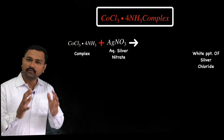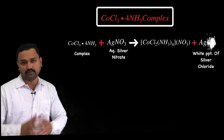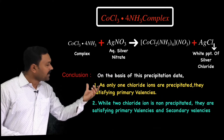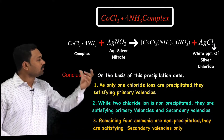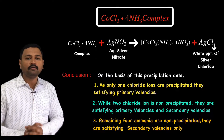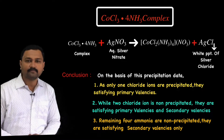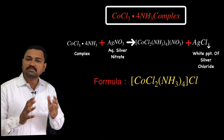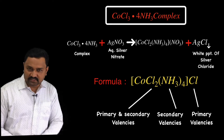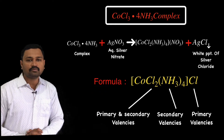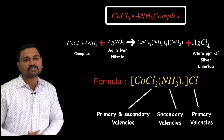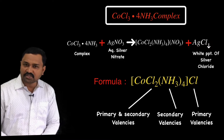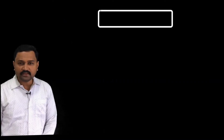The third complex is CoCl₃·4NH₃. When treated with aqueous silver nitrate, we obtain one mole of silver chloride. Werner concluded that two chloride ions satisfy primary as well as secondary valency along with the four ammonia molecules, while only one chloride ion satisfies its primary valency. Hence he formulated this complex compound as [Co(NH₃)₄Cl₂]Cl.